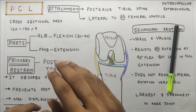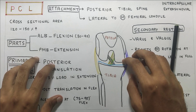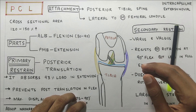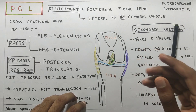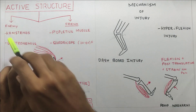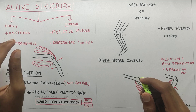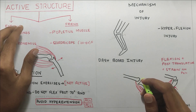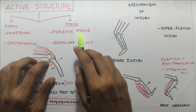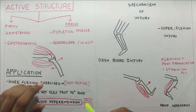Now that we know the attachments and primary and secondary restraint of the PCL ligament, let us look at the active structures which prevent posterior translation and also cause posterior translation. The enemy of PCL is the hamstrings and gastrocnemius — these are the muscles which cause posterior translation of the tibia. The friends of PCL are the popliteus muscle and quadriceps, which cause anterior translation.